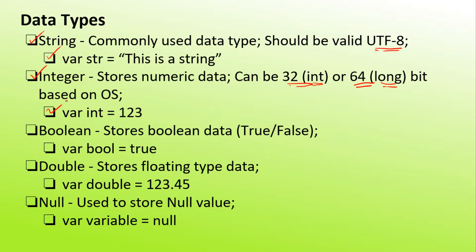The boolean data type stores either true or false: for example, where boolean equals true or false. The double data type stores floating point data — integers with decimal points. You can declare and assign the double data type accordingly. The null data type stores null values and can be declared and used depending on the user's requirements.